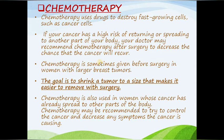Chemotherapy is sometimes given before surgery in women with larger breast tumors — the goal is to shrink the tumor to a size that makes it easier to remove with surgery. Chemotherapy is also used in women whose cancer has already spread to other parts of the body, to try to control the cancer and decrease any symptoms.